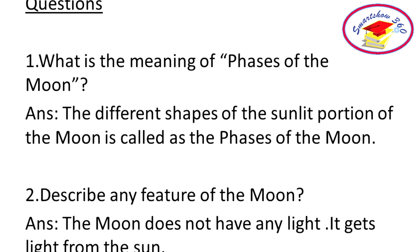And so we come to the last part of the paper — questions. Number 1. What is the meaning of phases of the moon? Answer: The different shapes of the sunlit portion of the moon are called the phases of the moon.